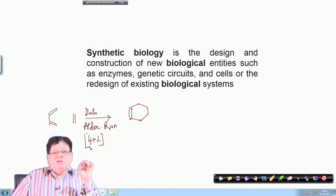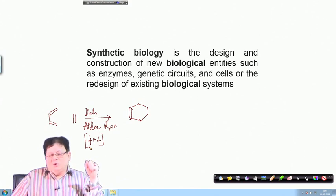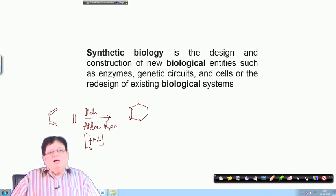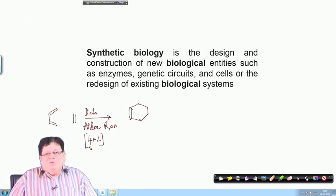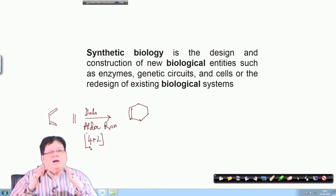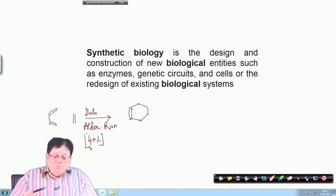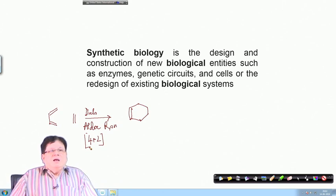Enzyme reactions happen at biological temperature — in the human system, about 37 degrees centigrade. For enzymes, heating has a negative effect on activity. Enzymes are folded in a 3-dimensional network called the tertiary structure. As you heat the enzyme, the conformation required to catalyze the reaction changes, and ultimately the enzyme loses its activity. Enzymes can catalyze reactions at biological temperature, basically 30 to 37 degrees centigrade.